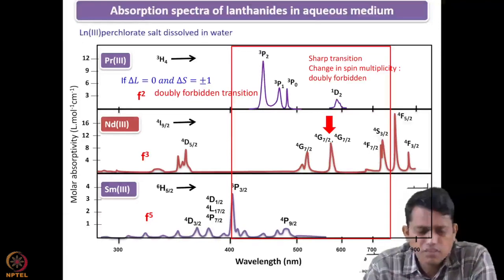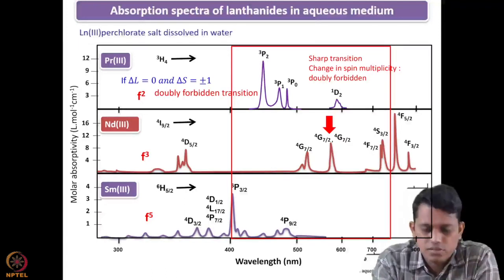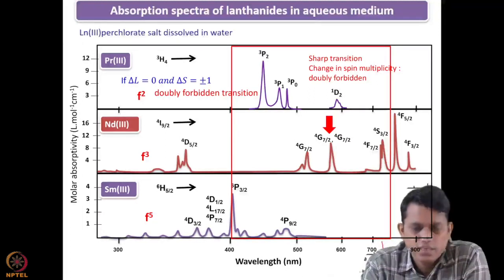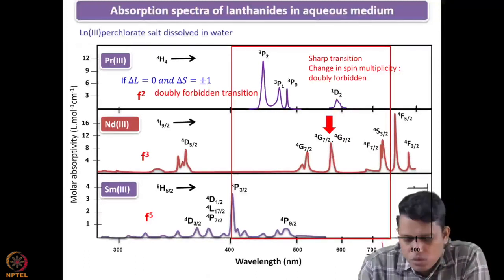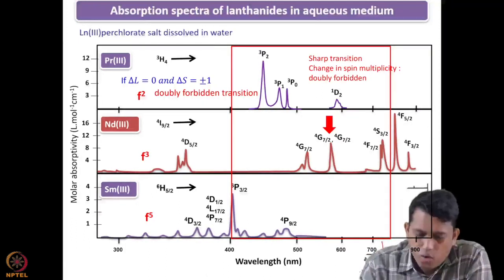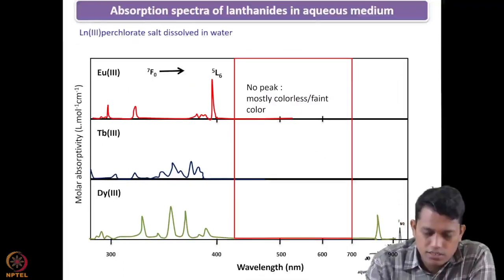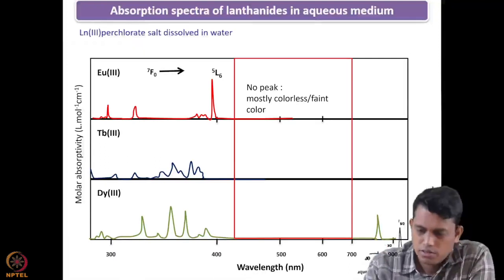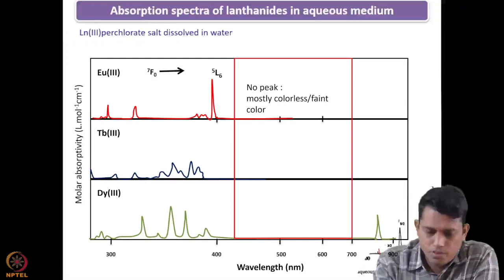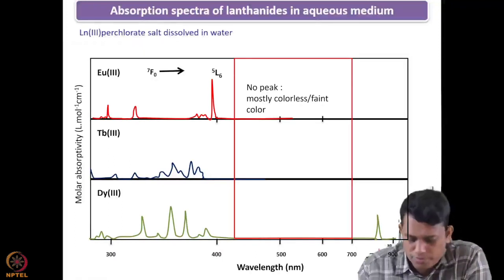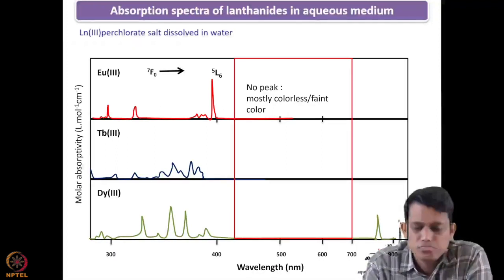In all these spectra we can observe some transitions in the visible region — roughly 400 to 700 nm. When you have some absorption band in this region, you get a spectral color, and the complementary color is visible to you. For Europium, if you mark 400 and 700 nm you can see almost no peak or very small intensity, so if you have a Europium salt it is almost colorless.